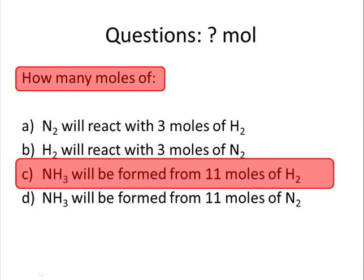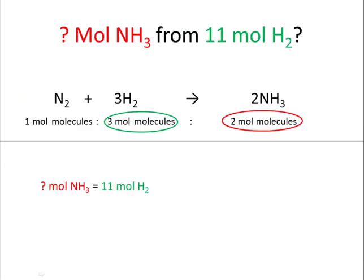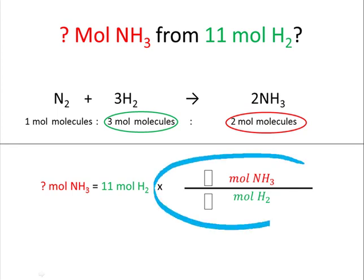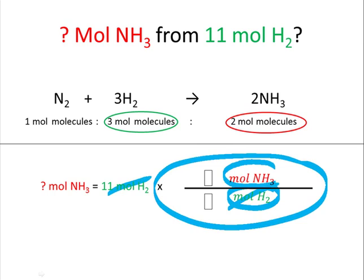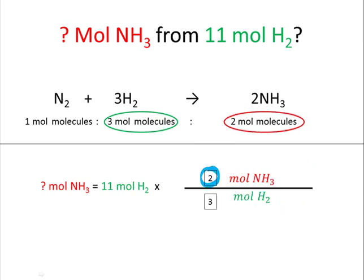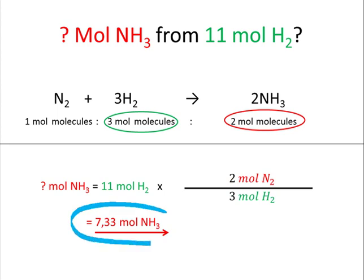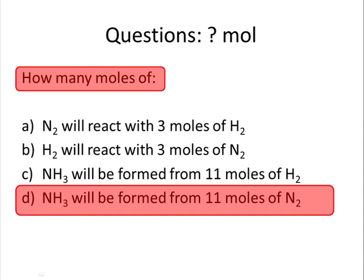How many moles of ammonia will be formed from 11 moles of hydrogen? Our unit factor has moles hydrogen at the bottom, moles ammonia at the top. For every 2 moles of ammonia, 3 moles of hydrogen. 11 times 2 divided by 3 equals 7.33 moles ammonia.